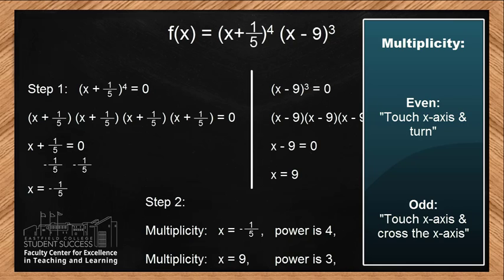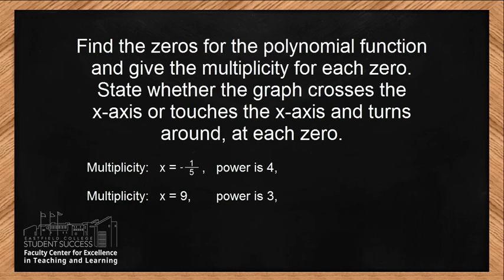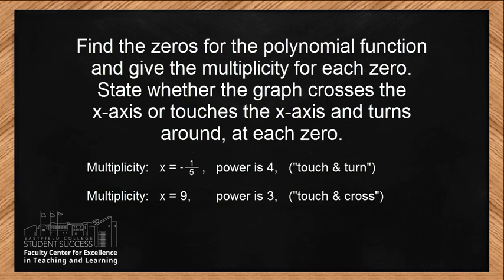So let's go back and review. Did we find the zeros? Yes. The multiplicity of x equals negative one-fifth is 4; the multiplicity of x equals 9 is 3. Have we determined what happens at each root? Yes. At x equals negative one-fifth, the function will touch and turn. At x equals 9, the function will touch and cross.